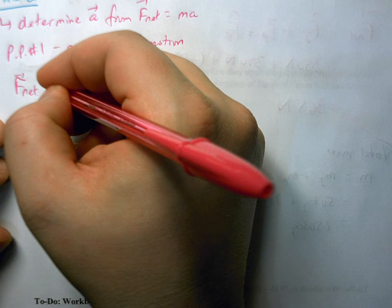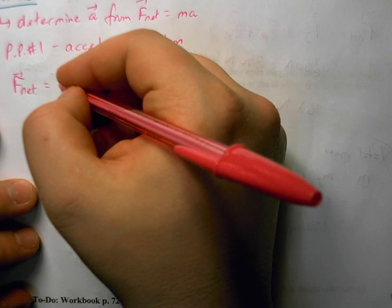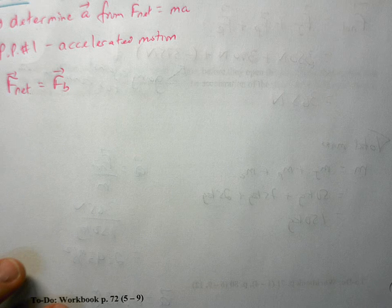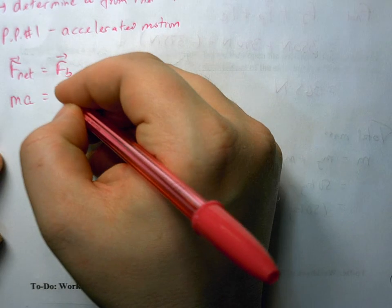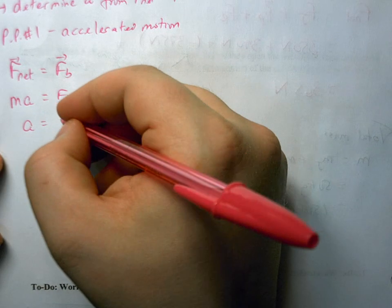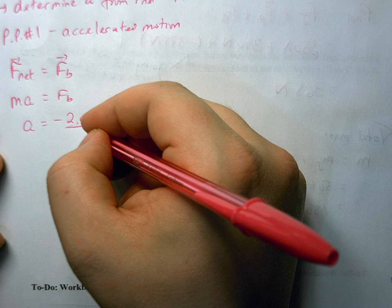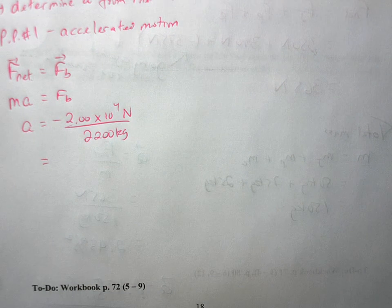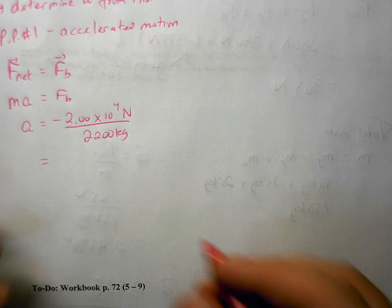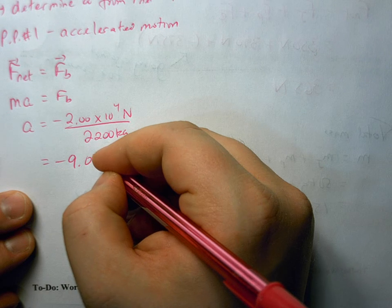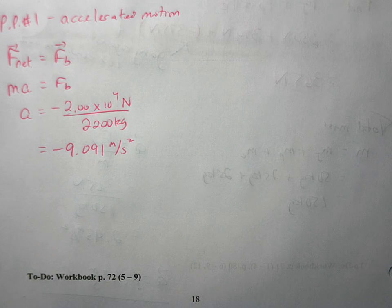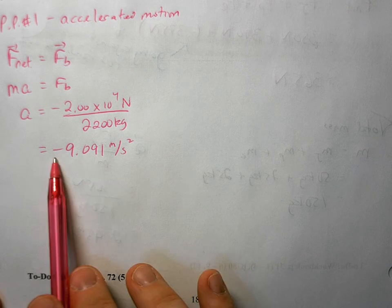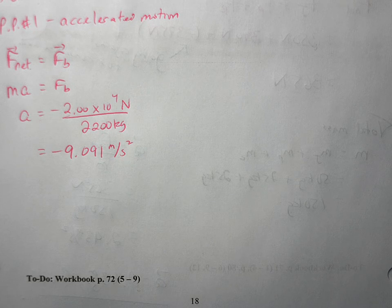Looking at the net force in the direction of motion only, the only horizontal force is the braking force. So from Newton's second law: ma = F_b, which means acceleration equals the braking force divided by mass: negative 2.00 × 10⁴ newtons divided by 2200 kilograms. That gives us an acceleration of approximately negative 9.091 meters per second squared.